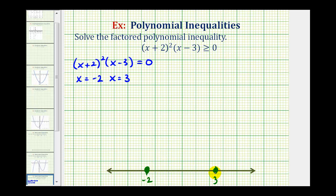By plotting these two points, we now have three intervals: the interval on the left, the interval in the middle, and the interval on the right. We'll pick a test value in each interval to see if it satisfies the inequality. If it does, that interval is part of the solution; if not, it isn't.